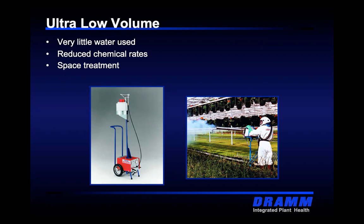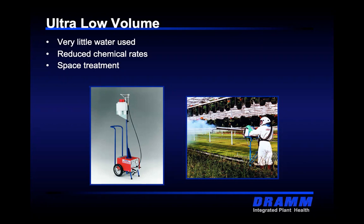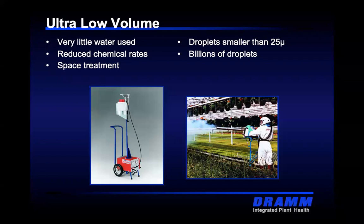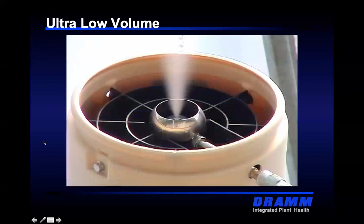We like to have HAF fans running to help distribute the material. This is wonderful during a busy late season when you need to spray and just don't have time — you can set these machines up and go home, or move through houses very quickly with something like the pulsefog. Droplets are smaller than 25 microns, and we're talking billions and billions of droplets. We're getting coverage on the leaf tissue surface but also treating any spores floating around — for foliar diseases like botrytis and powdery mildew, these machines are wonderful for treating the whole space along with the leaf tissue.